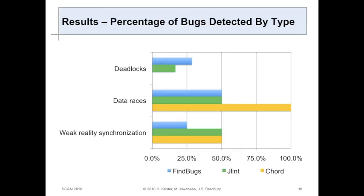Using the same results, we divided them by bug type detected. We were looking for three kinds: deadlocks, data races, and the rest under improper synchronization. Deadlocks were the most difficult to find - Cord found no deadlocks whatsoever, and the other two did not perform much better. When it came to data races, they were better: Cord found all the data races, and the other two found 50% of all data races. For improper synchronization - like using notify instead of notify all - it was 50% for JLint and Cord, and 25% effectiveness for FindBugs.